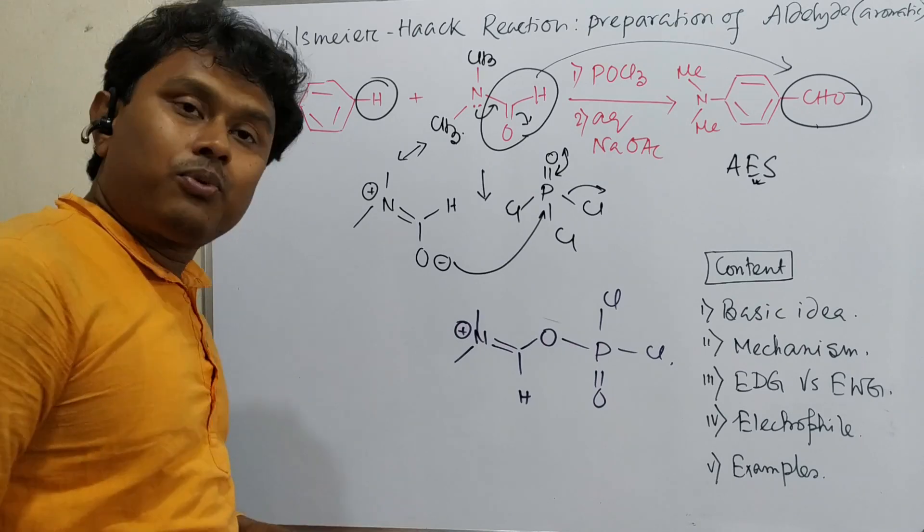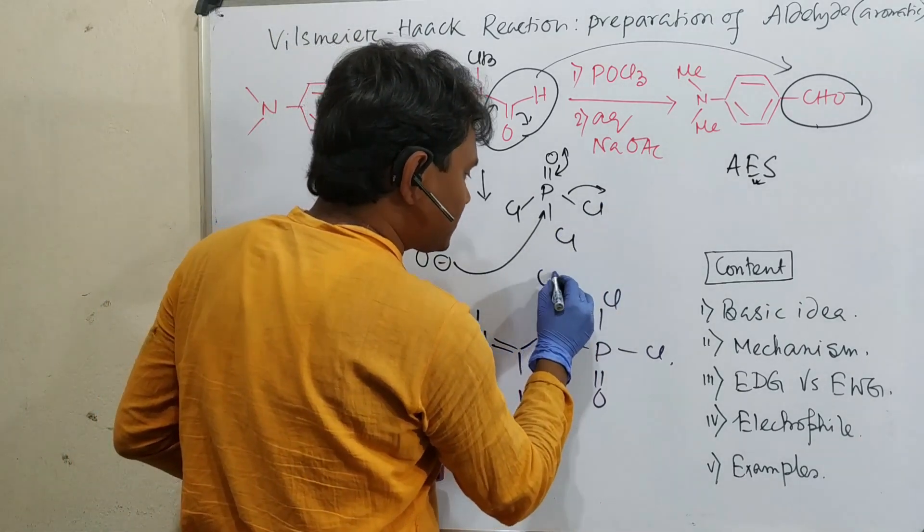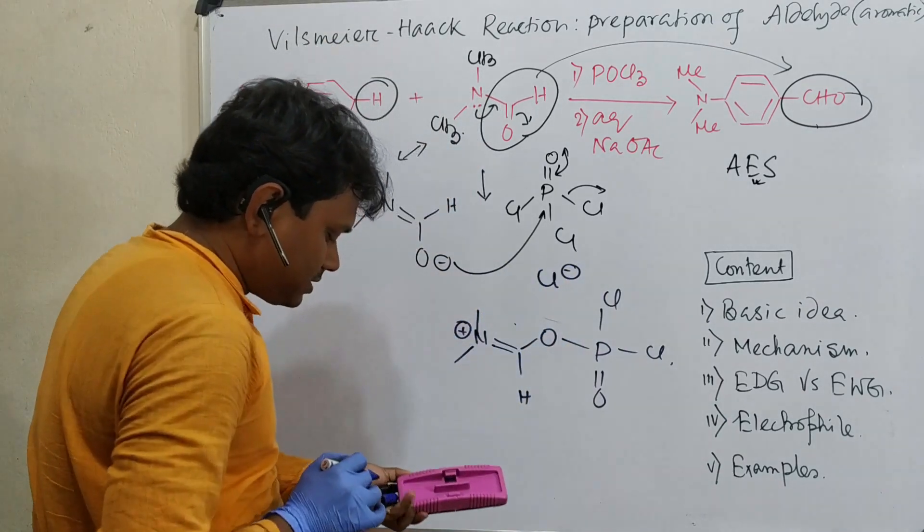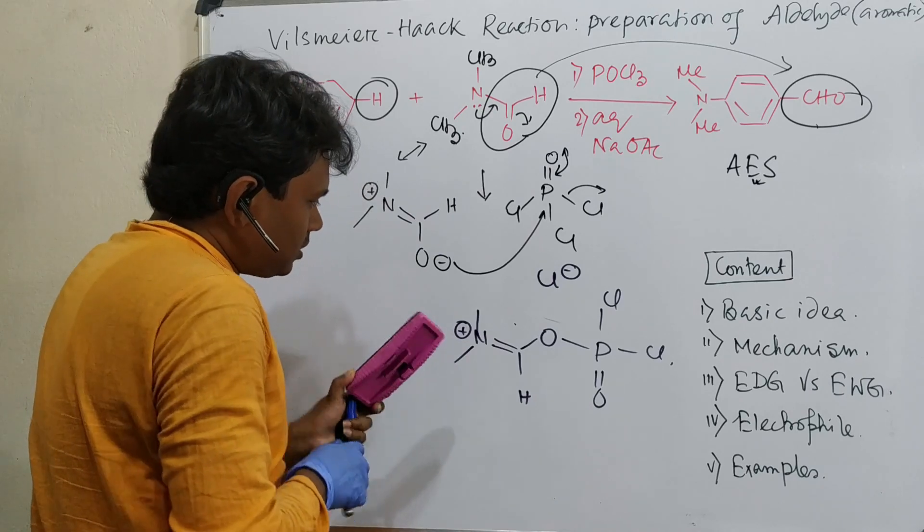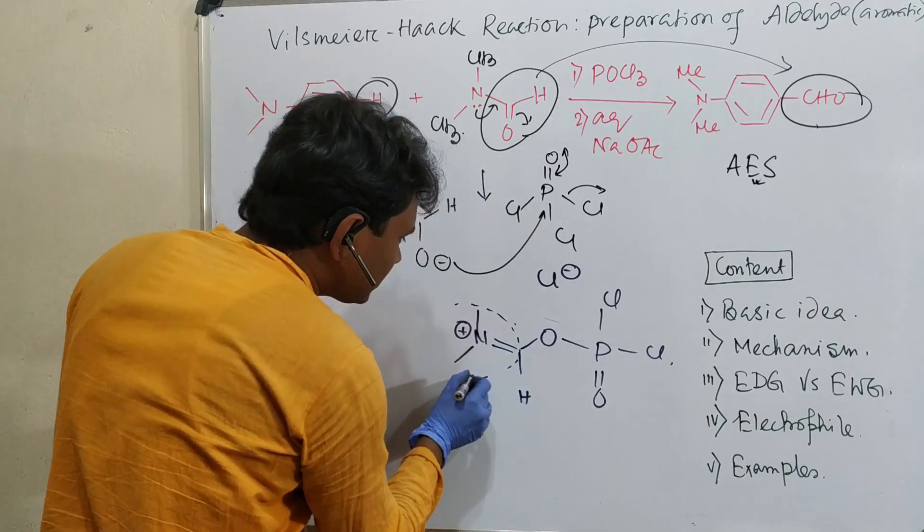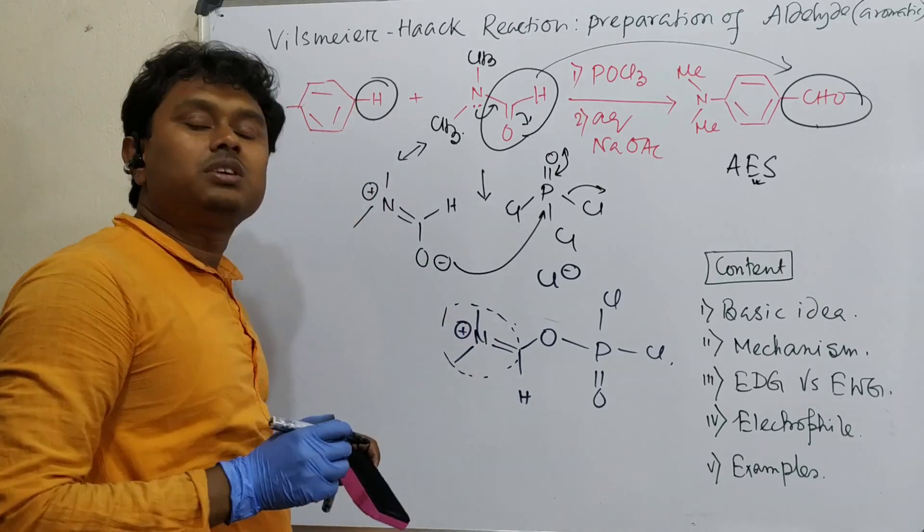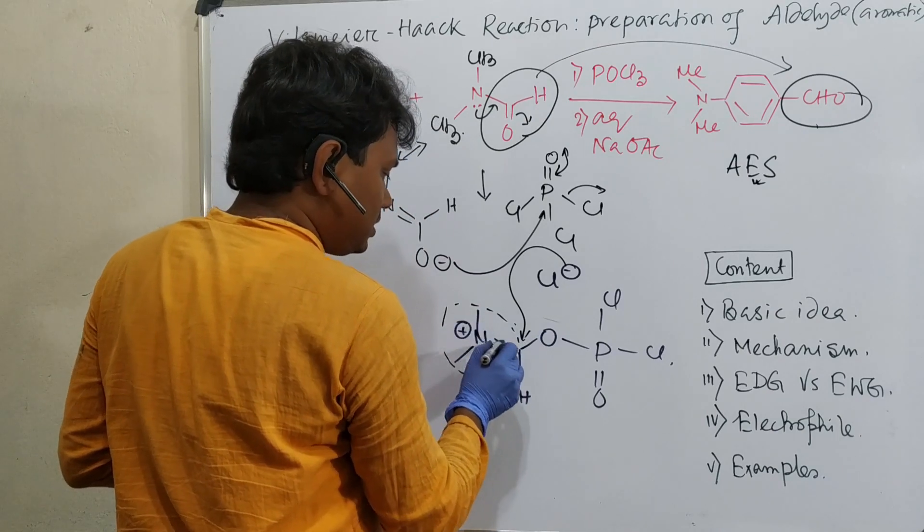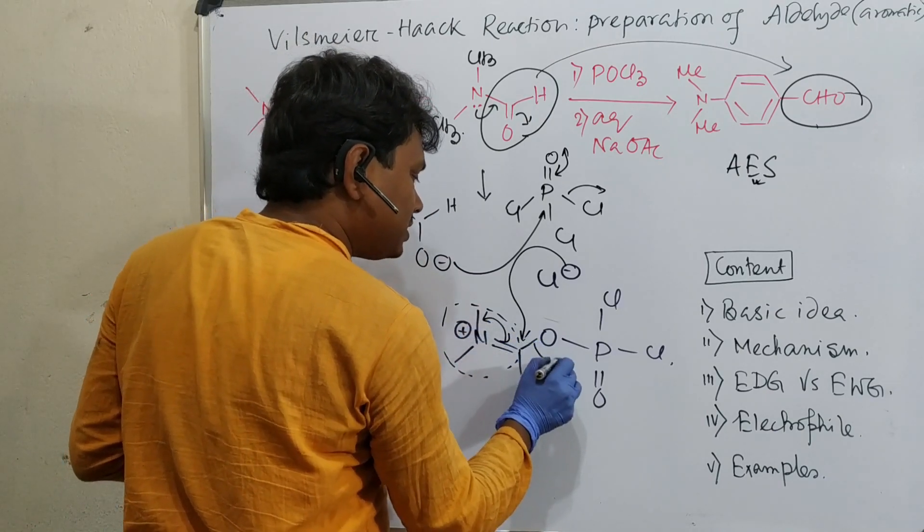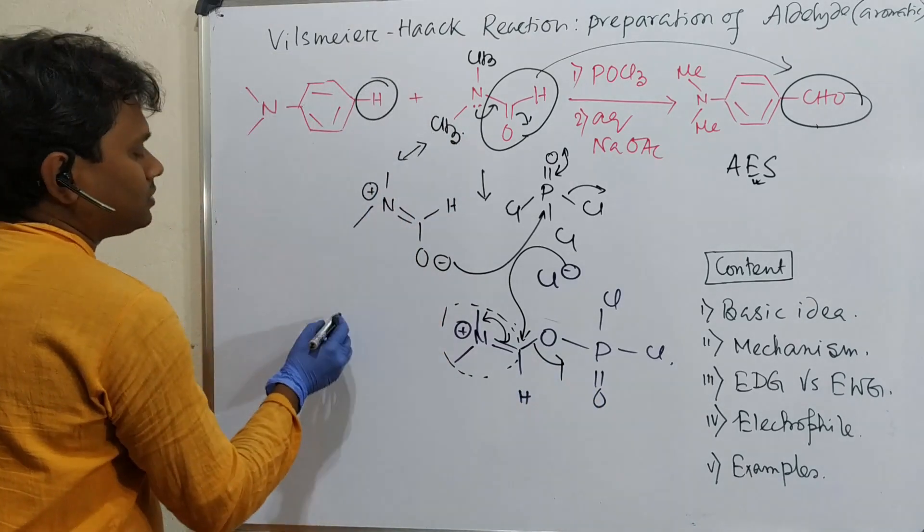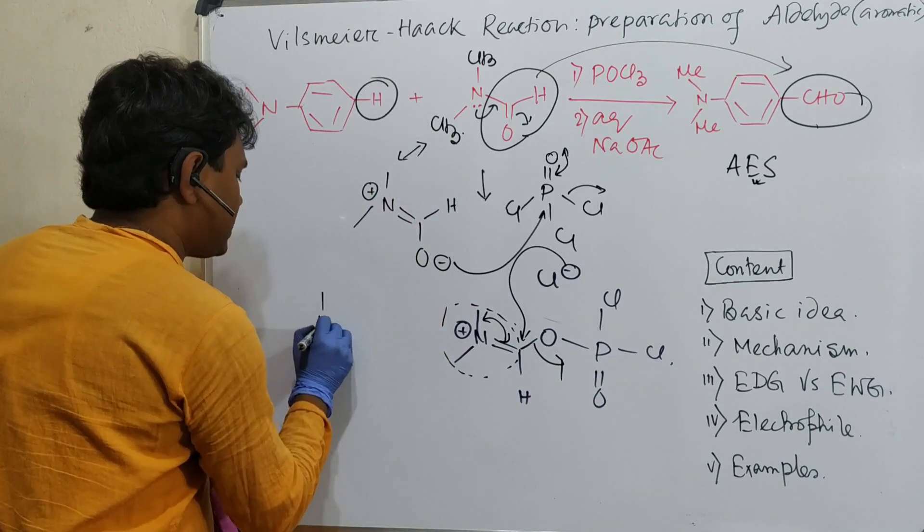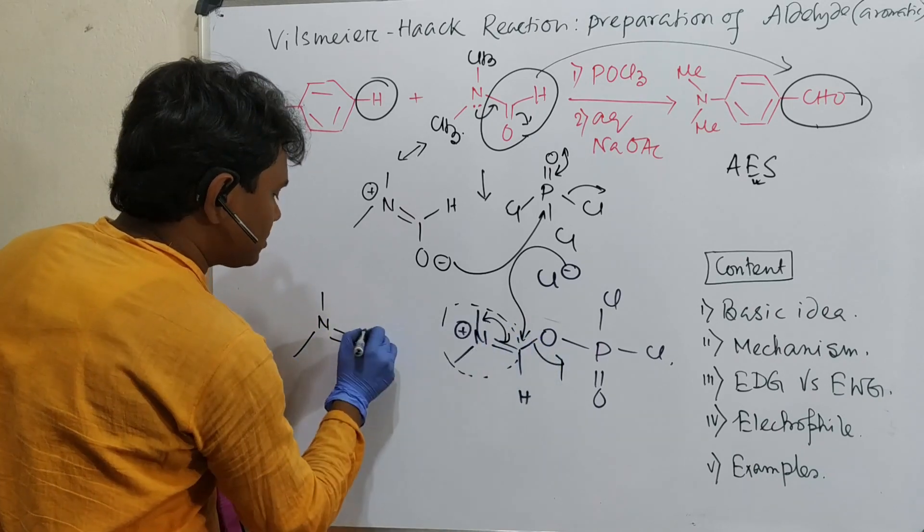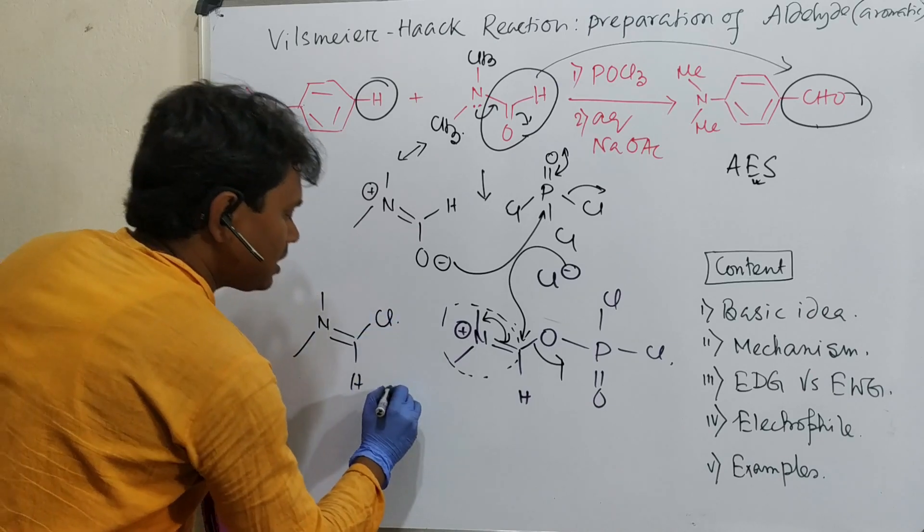After reaction, one chloride left. This structure looks like a protonated iminium. Chloride can attack, it will open the P-O bond, and this leaves. This gives N double bond O-H structure where O is substituted by Cl.